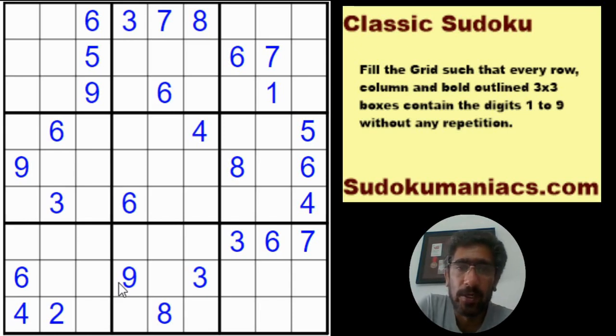The rules of the Sudoku are no digit can repeat in a row, column, or a box. Yeah, we're talking about classic, so that's the end of the rules. So let's start. I see there is a 3, 3, and 3 here, this is a 3.